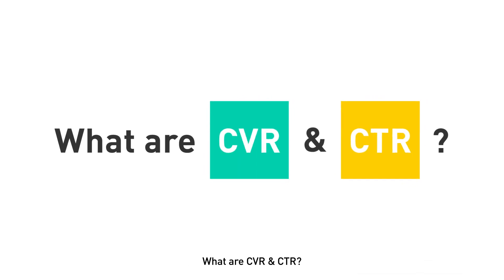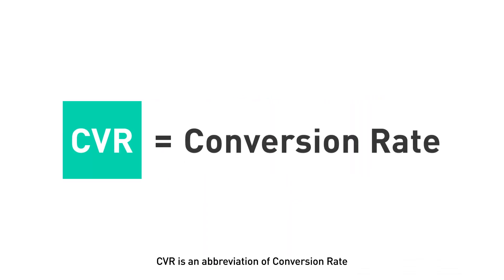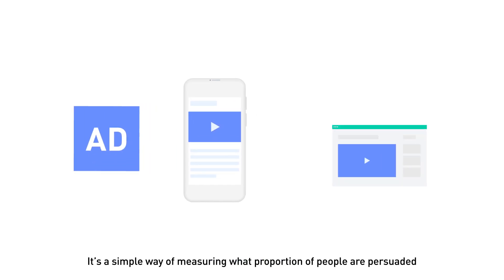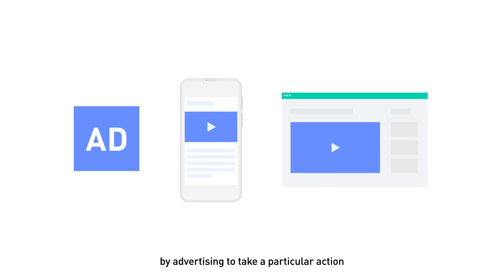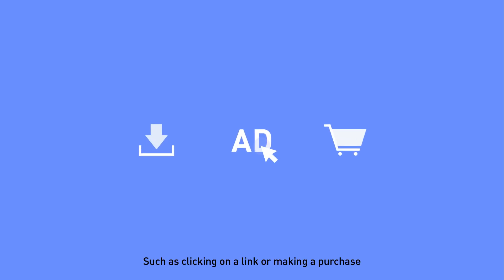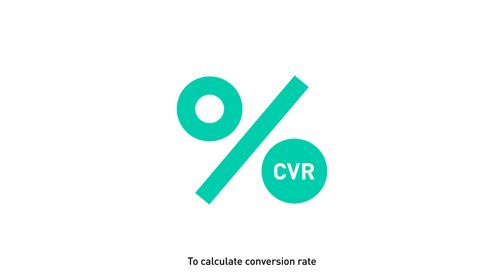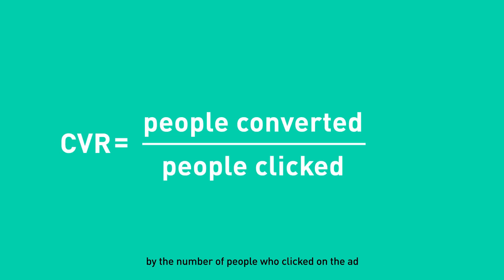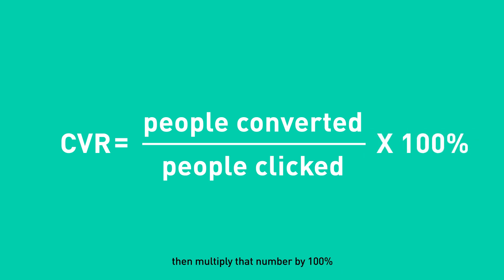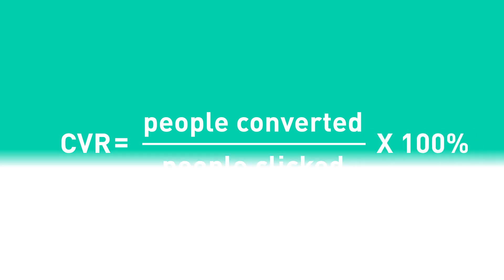What are CVR and CTR? CVR is an abbreviation of conversion rate. It's a simple way of measuring what proportion of people are persuaded by advertising to take a particular action, such as clicking on a link or making a purchase. To calculate conversion rate, you just need to divide the number of people who converted by the number of people who clicked on the ad, then multiply that number by 100%.